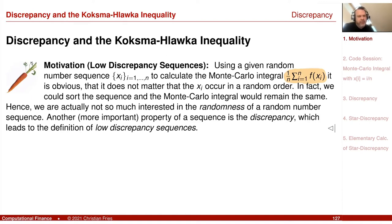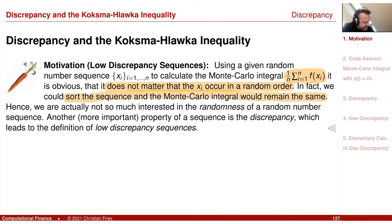We derived this from probabilistic results, but really it does not matter that the xi occur in random order. In fact, we could sort the sequence and the Monte Carlo integral would still be the same. If you take the sum over some numbers, it could be a sorted sequence. So the question is: what is the property that has to be fulfilled by this sequence xi to get a good approximation?